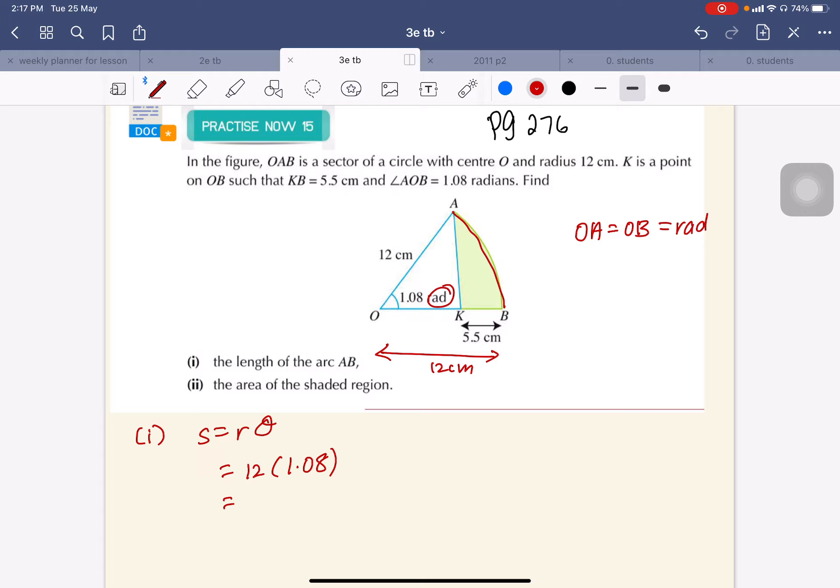So 12 times 1.08 equals 12.96. This is exact, so don't need to round off to 3 significant figures. This is your final answer.